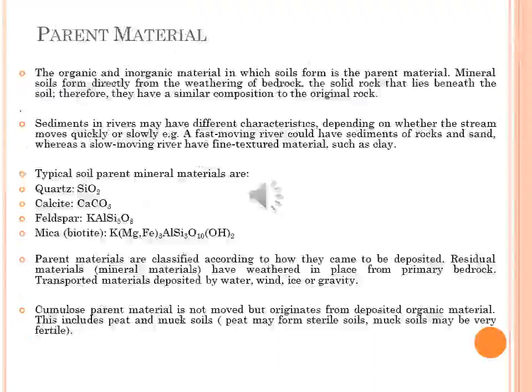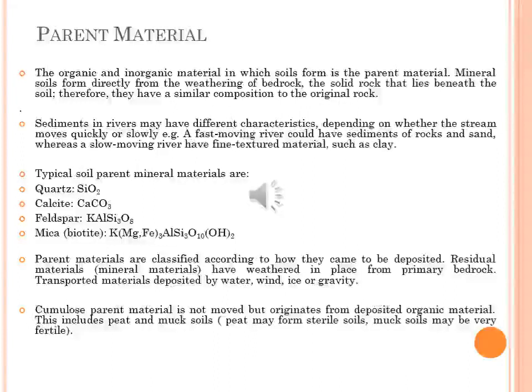The organic and inorganic material in which soil forms is known as parent material. Mineral soil that forms directly from the weathering of bedrock — the solid rock beneath the soil — has a similar composition to the original rock. Other soils form in material that came from elsewhere, such as sand and glacial drift. Materials located at depth in the soil are unchanged compared with the deposited material.